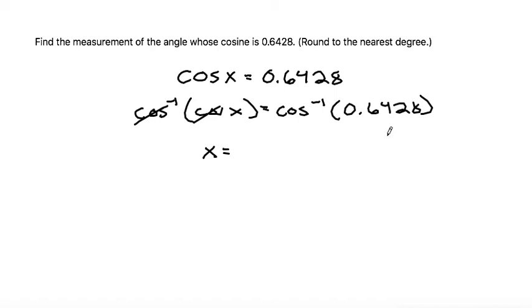Taking my calculator, right next to the cosine button, you should see another cosine, or you might have to hit a second function to get to the inverse cosine. But if you find the inverse cosine of 0.6428, make sure your calculator is in degrees since they want us to round to the nearest degree. I get that to be 49.999 or rounding to 50 degrees.